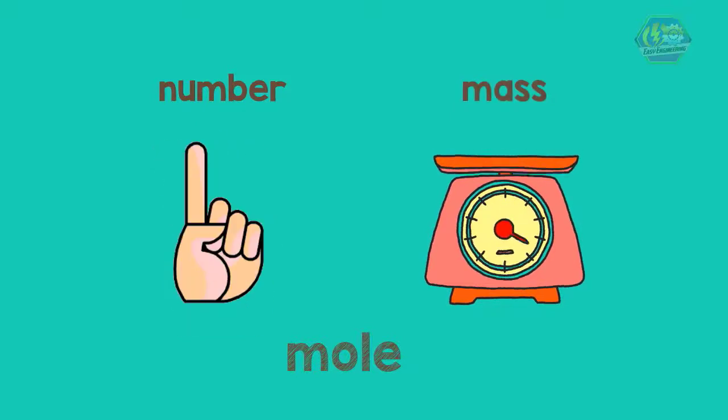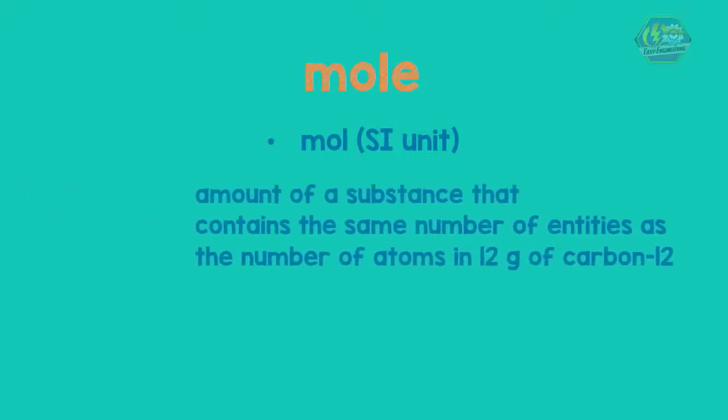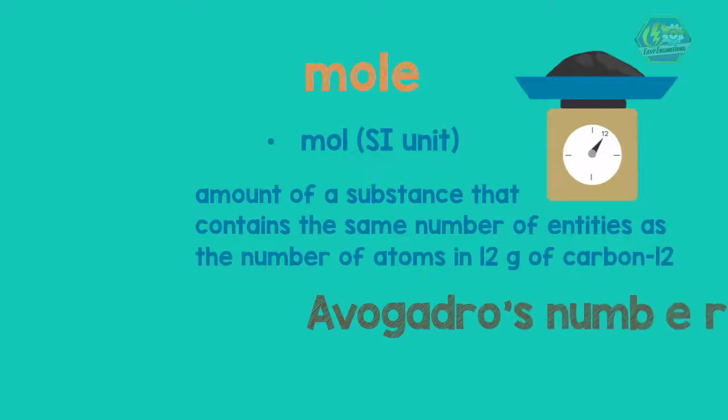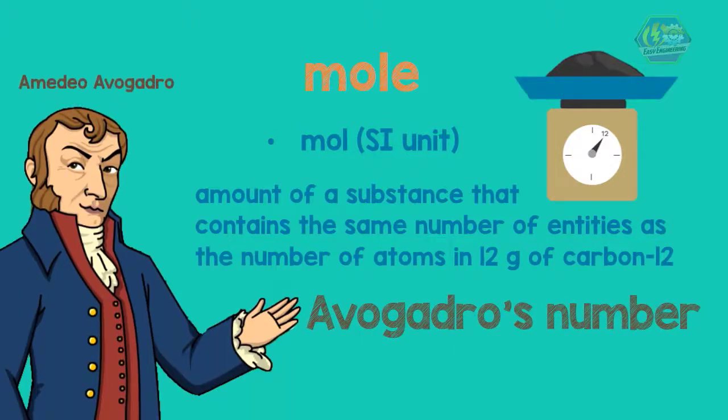Now let us define the mole. The mole, abbreviated as mol, is the SI unit for amount of substance. It is defined as the amount of a substance that contains the same number of entities as the number of atoms in 12 grams of carbon. This number is called Avogadro's number in honor of the Italian physicist Amedeo Avogadro, which is equal to 6.022 times 10 to the 23.